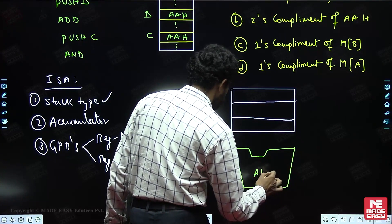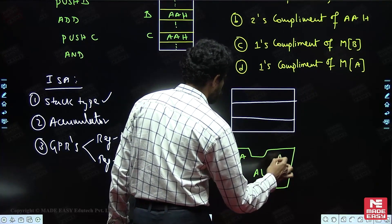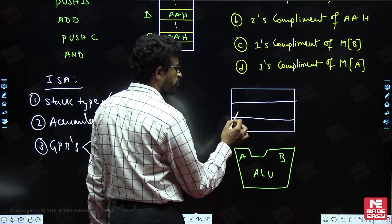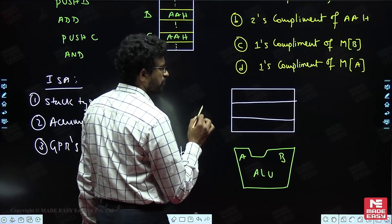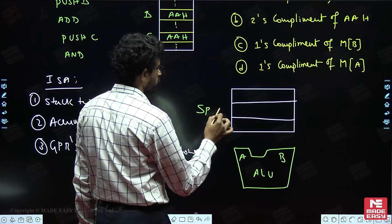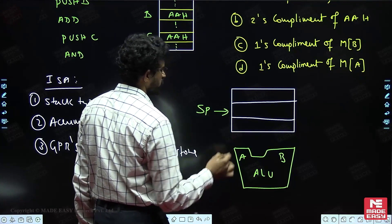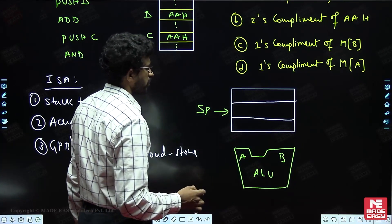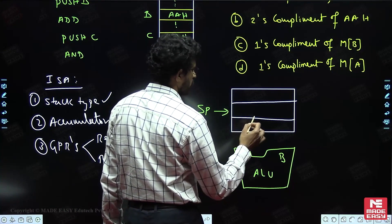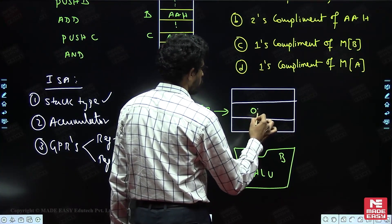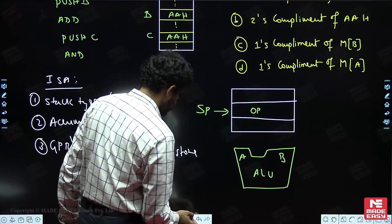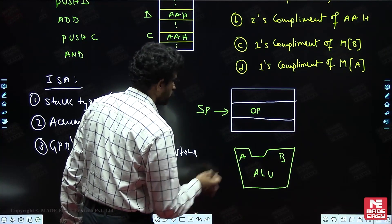The ALU has two inputs, and the data will be operated from the top of the stack. The stack pointer points to some address location. There are two operands — operand 1 and operand 2. You have to think about how this program operates inside the microprocessor.